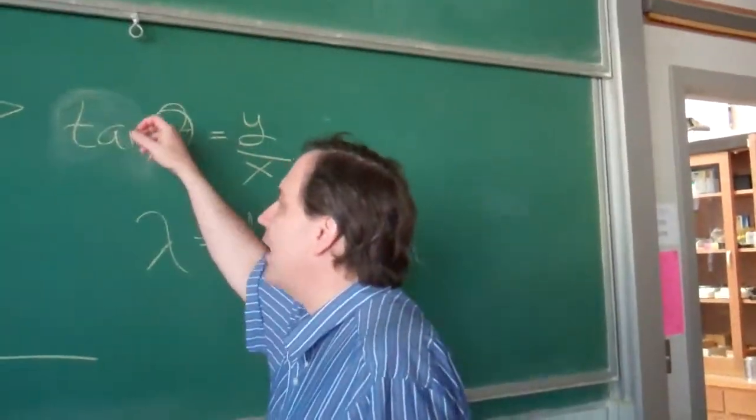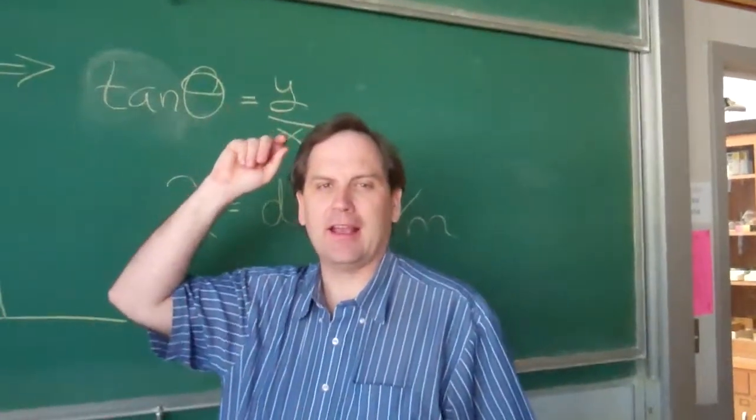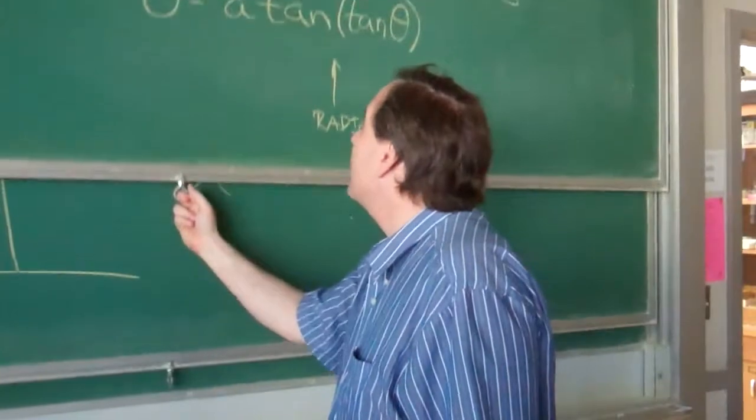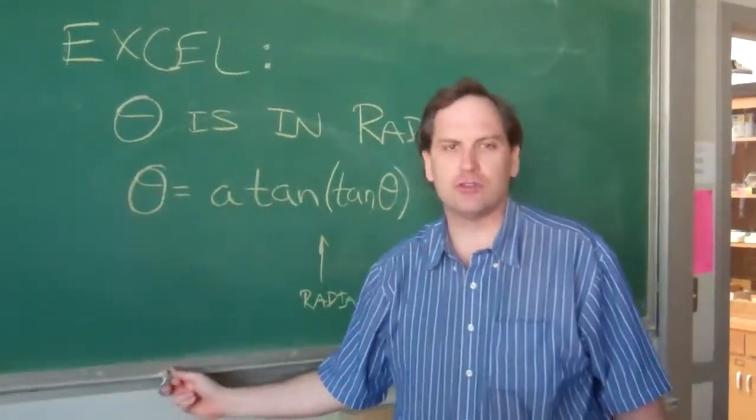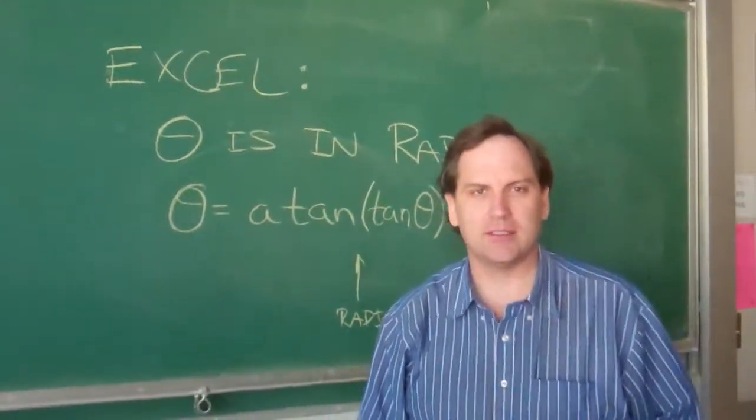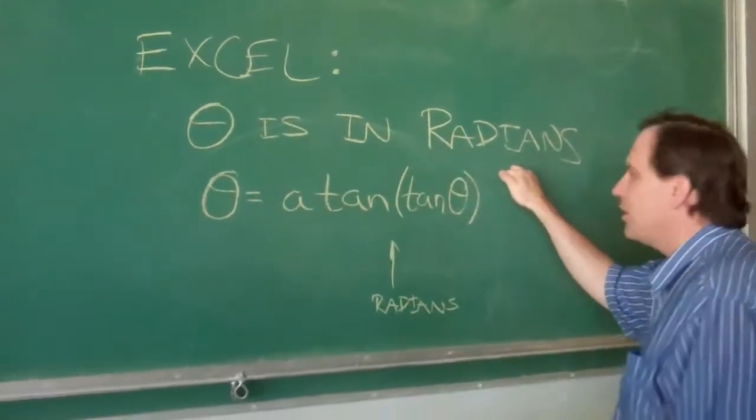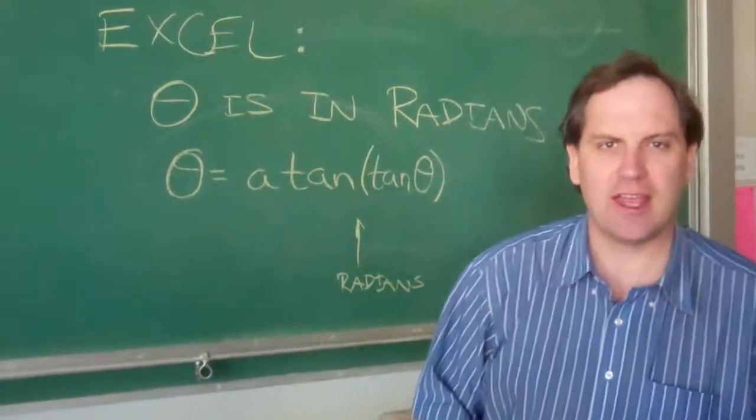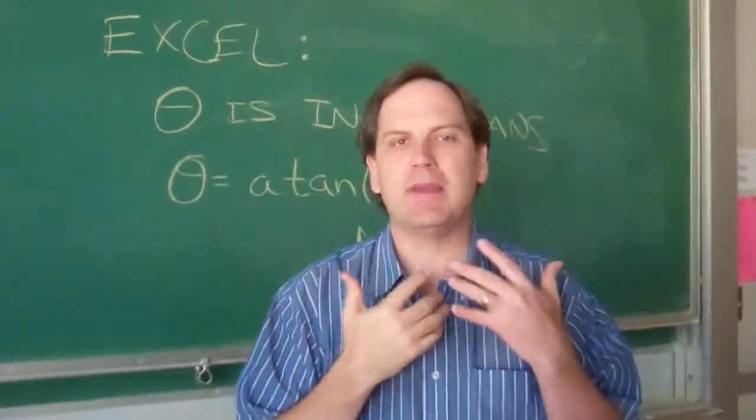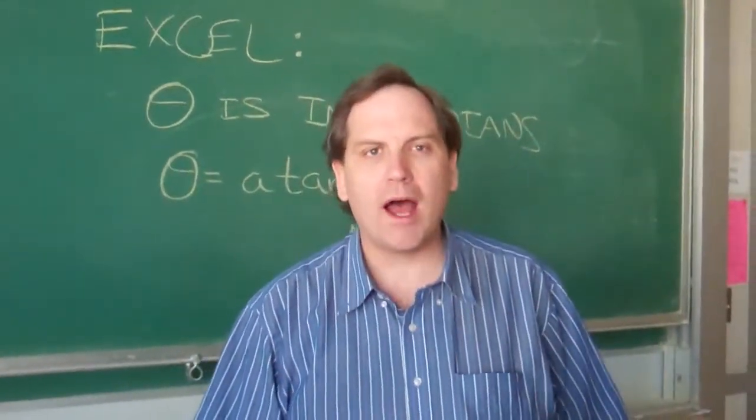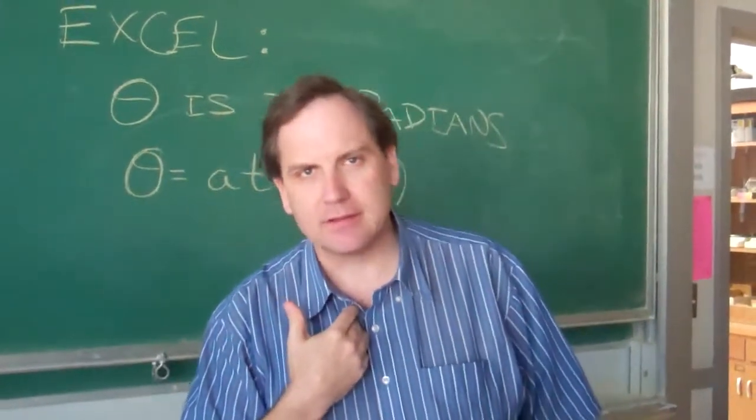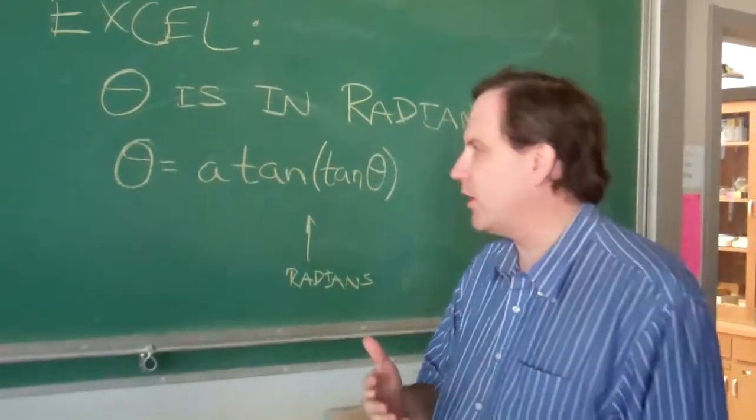Because the one thing I want you to realize is Excel, in this case, isn't always your friend. Because for some stupid reason, ask Bill Gates, not me, in Excel, theta is in radians, not degrees. When you do it like tangent of theta or sine of theta, everything has to be in radians. Why? Like I said, don't ask me, ask Bill Gates.